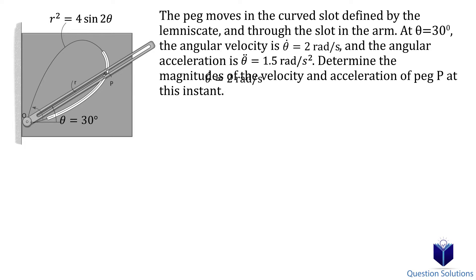We know the angular velocity, the angular acceleration, and from the diagram we get the equation representing the position of the peg, which is r² = 4sin2θ.